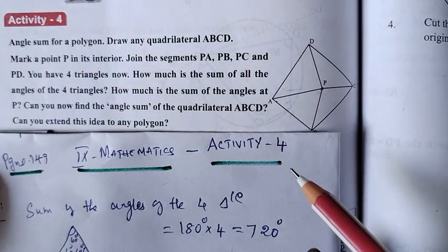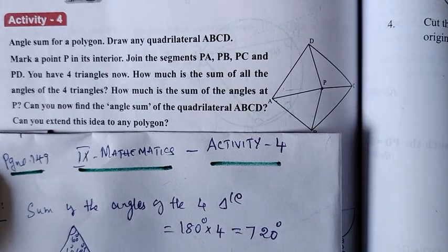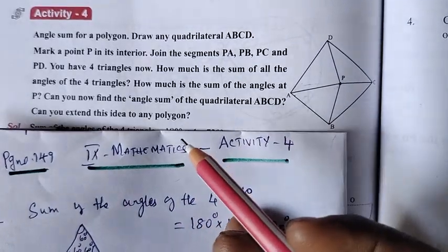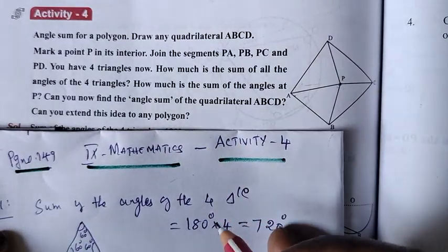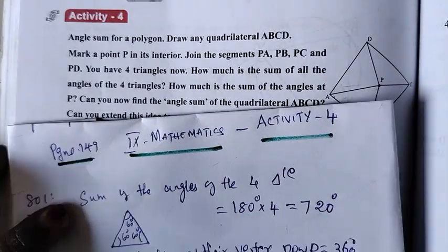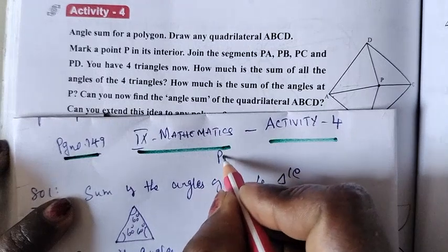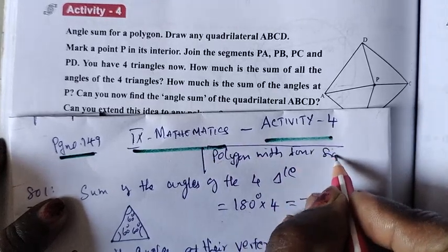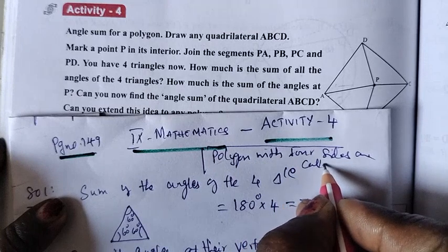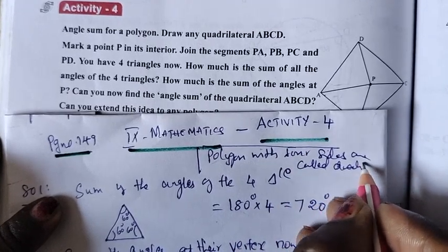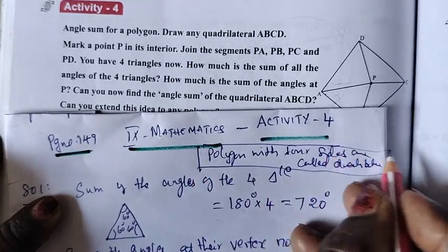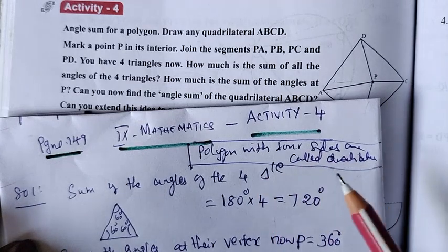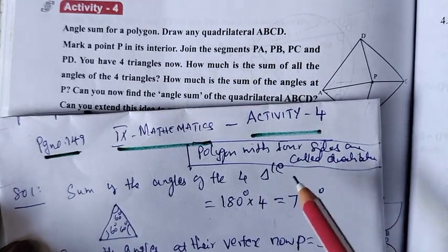Yes, we can extend this idea to any polygon. A polygon with four sides is called a quadrilateral. The angle sum of the polygon that is a quadrilateral can be found this way, because any polygon with four sides is called a quadrilateral.